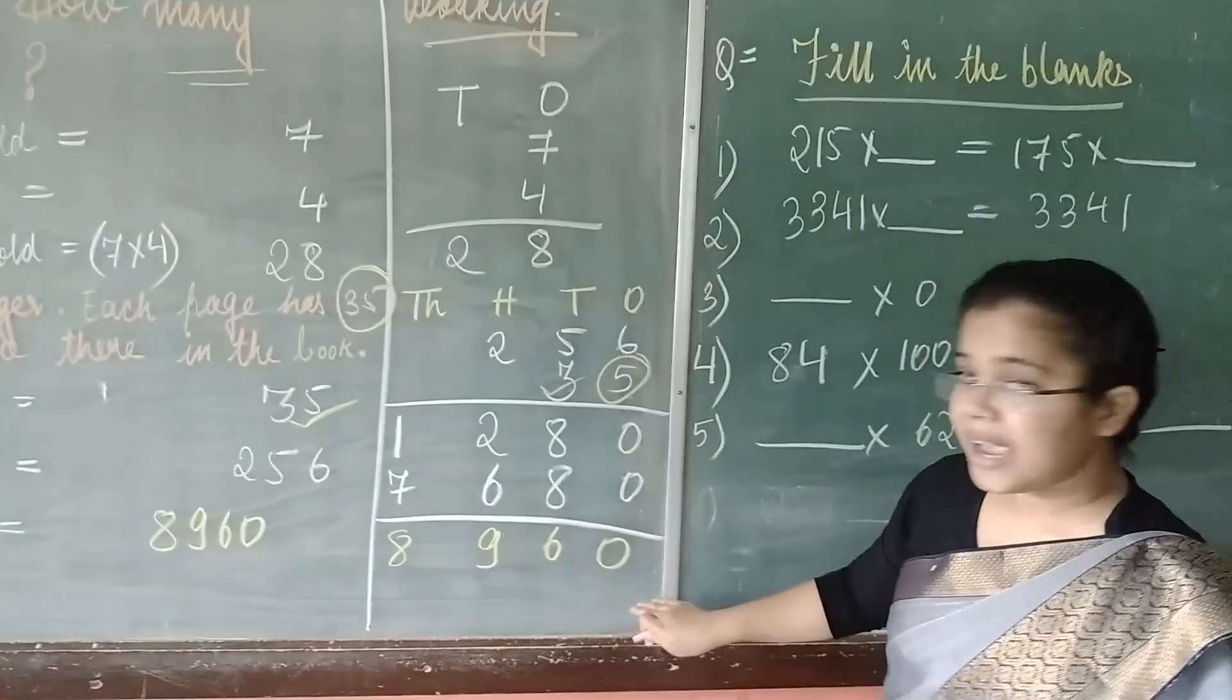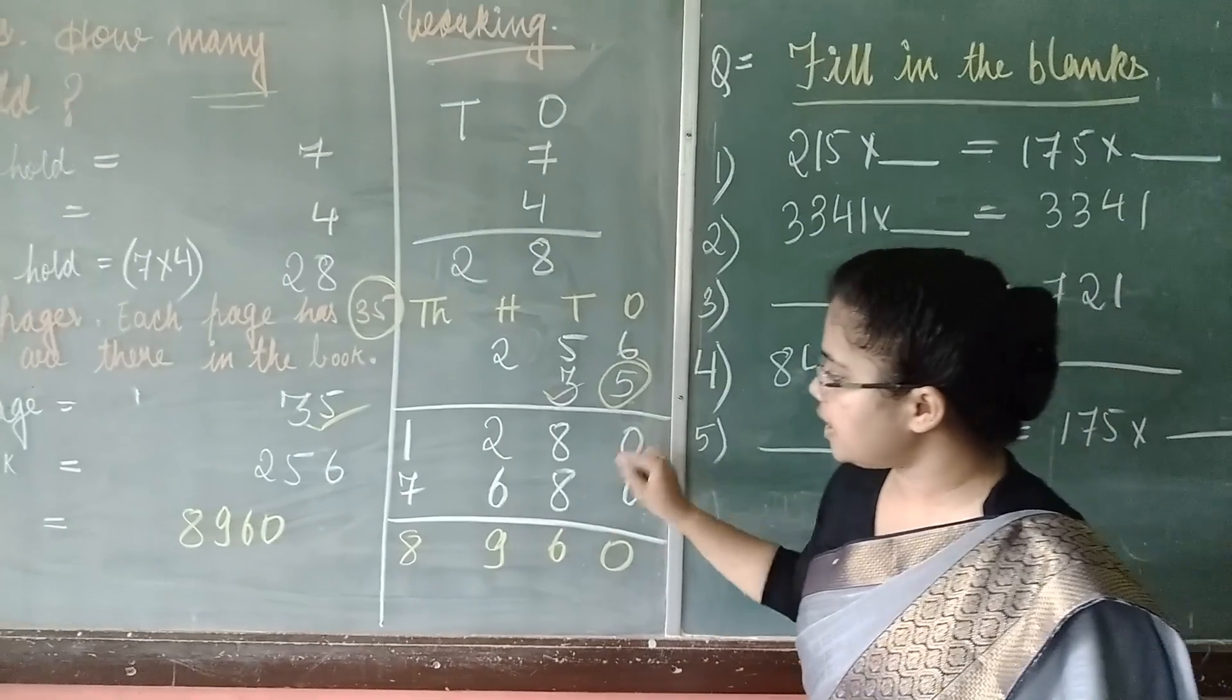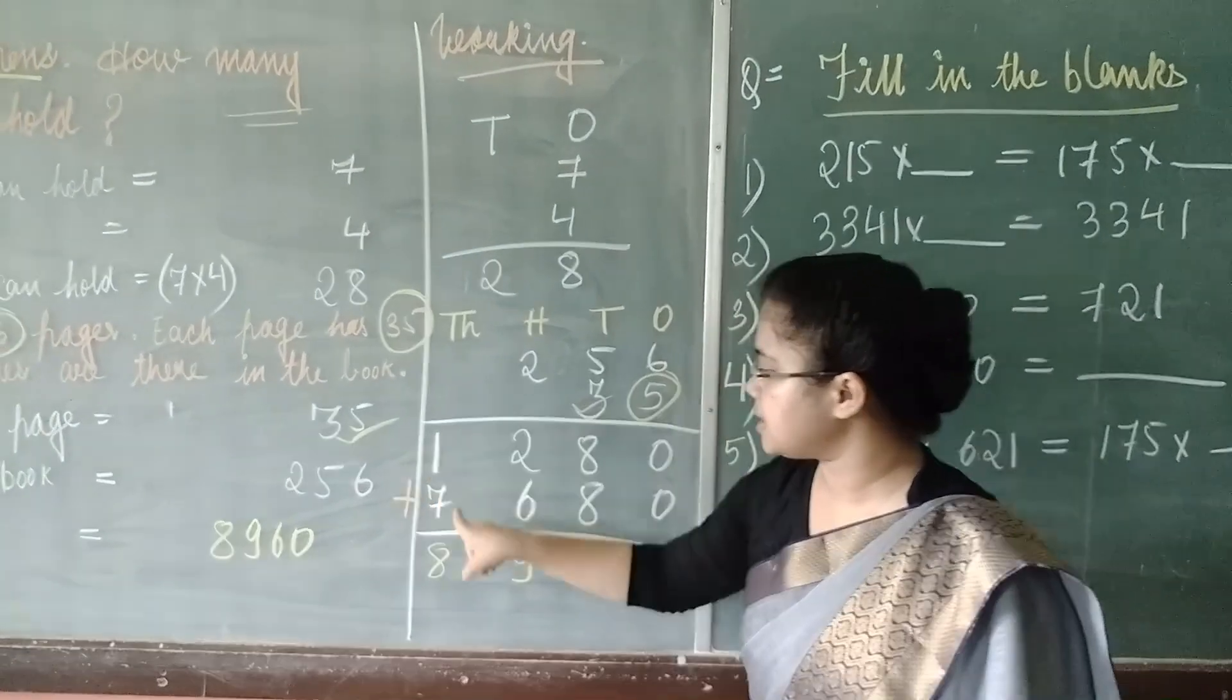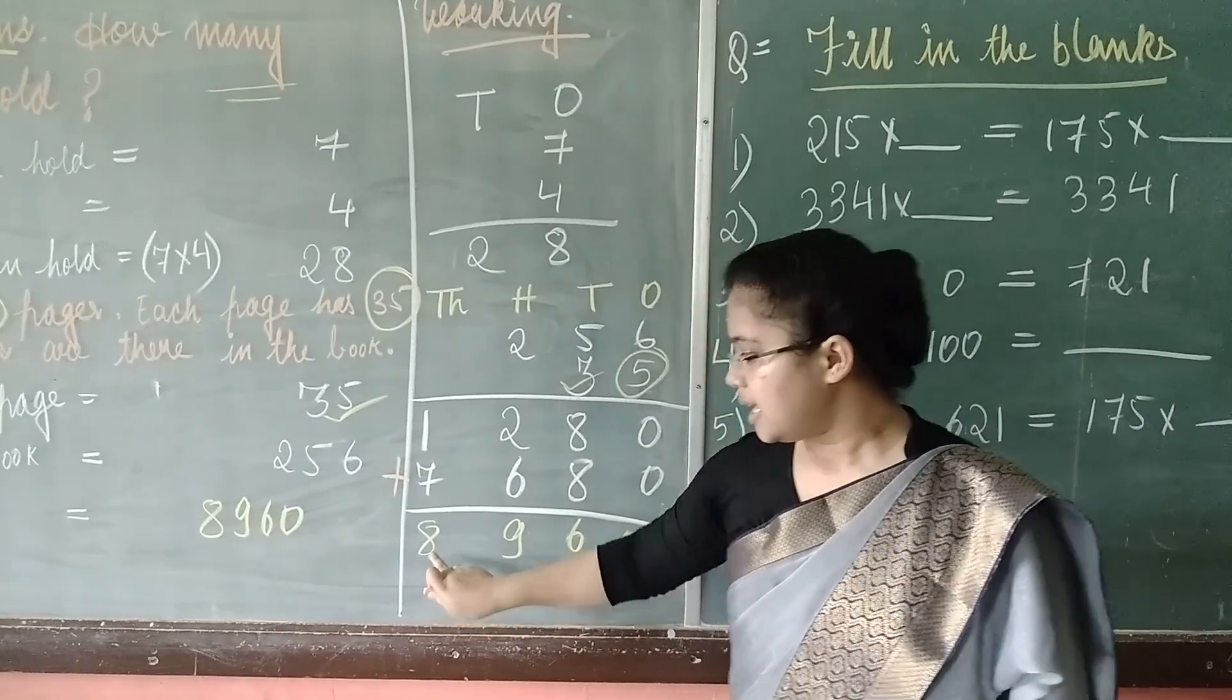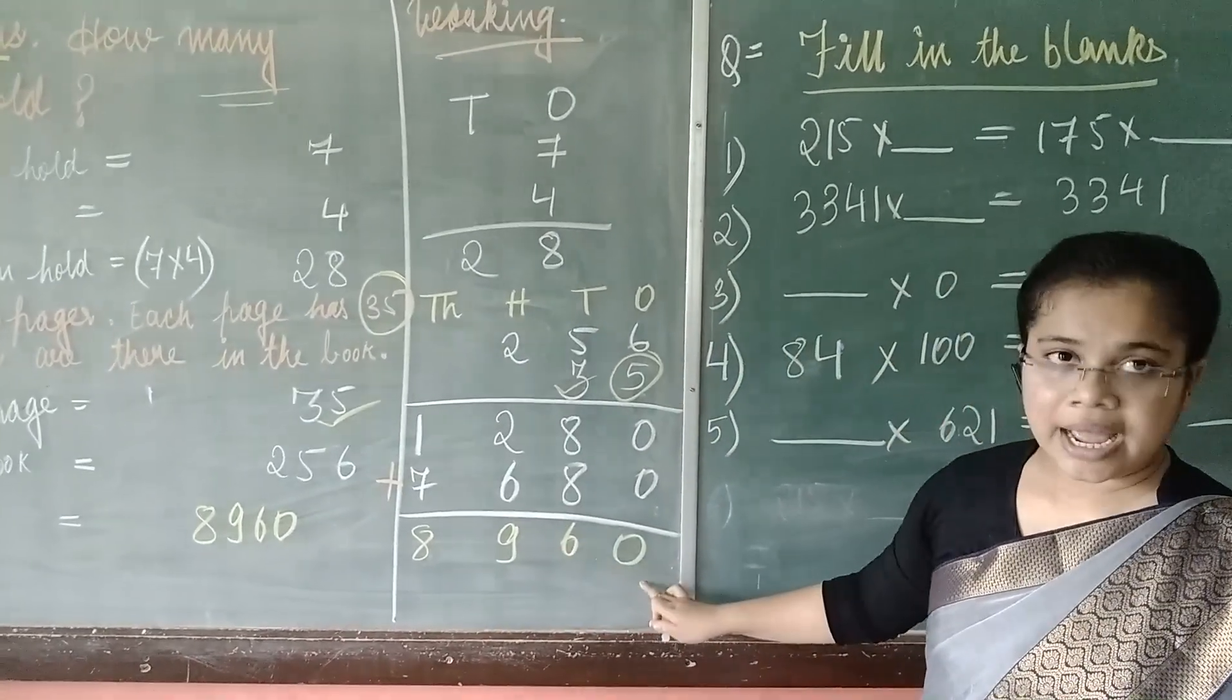Now, to get the final result or to get the product of this number, we add these two numbers. When we add these two numbers, we will get 8,960.